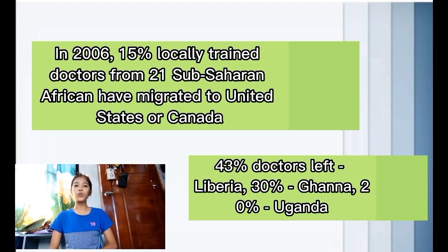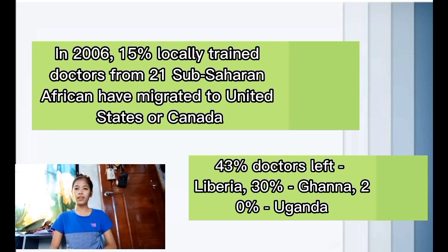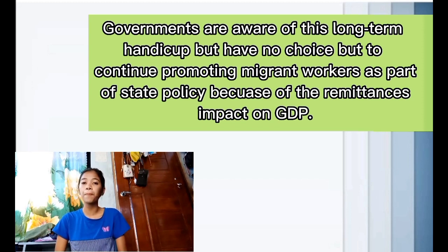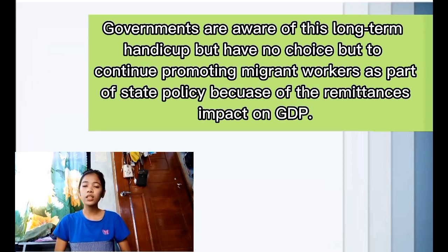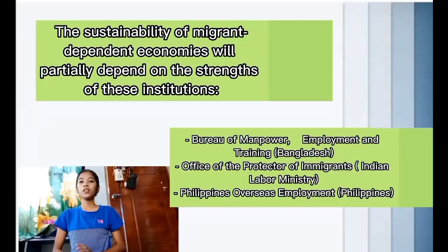Of the doctors who remained in Sub-Saharan Africa, 43 percent stayed in Liberia, 30 percent in Ghana, and 21 percent in Uganda. Governments are aware of this long-term handicap but have no choice but to continue promoting migrant workers as part of state policy because of the remittances' impact on GDP. Even as they lose workers, governments still encourage working abroad because of the tax returns and remittances received in the country.